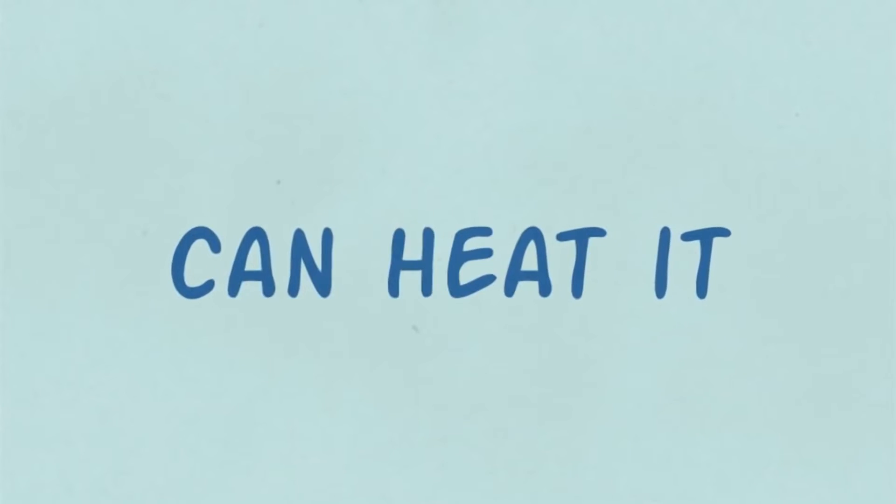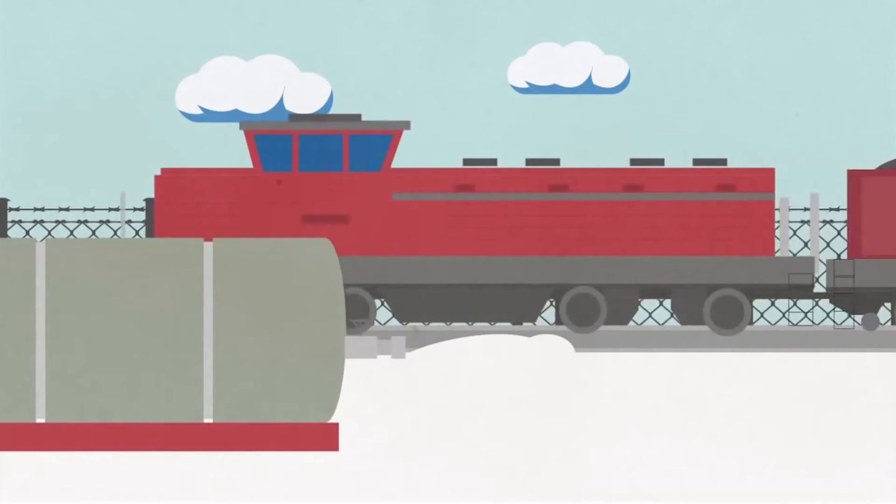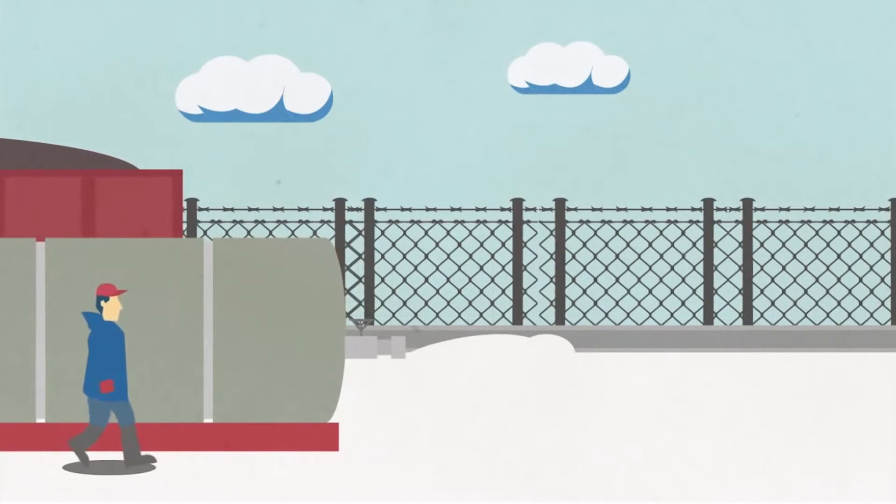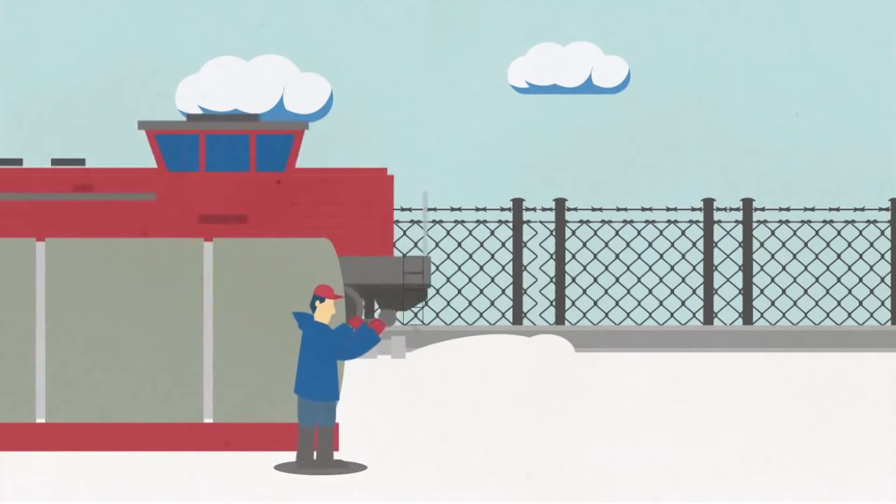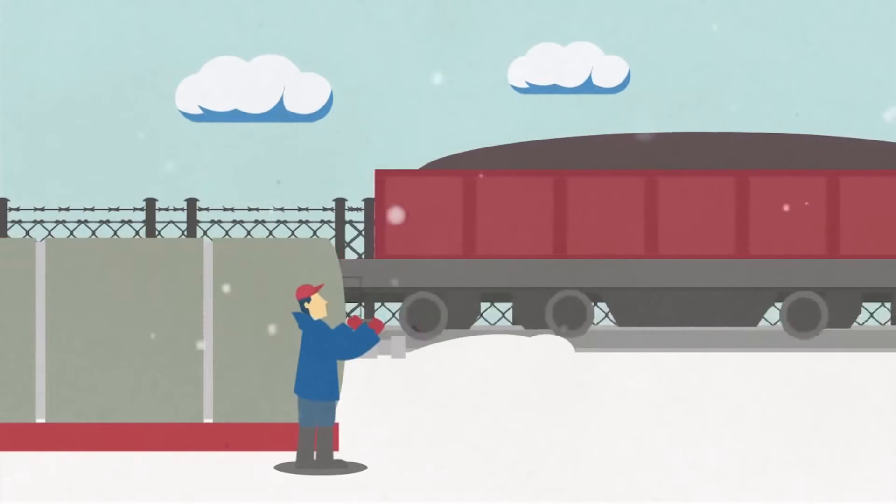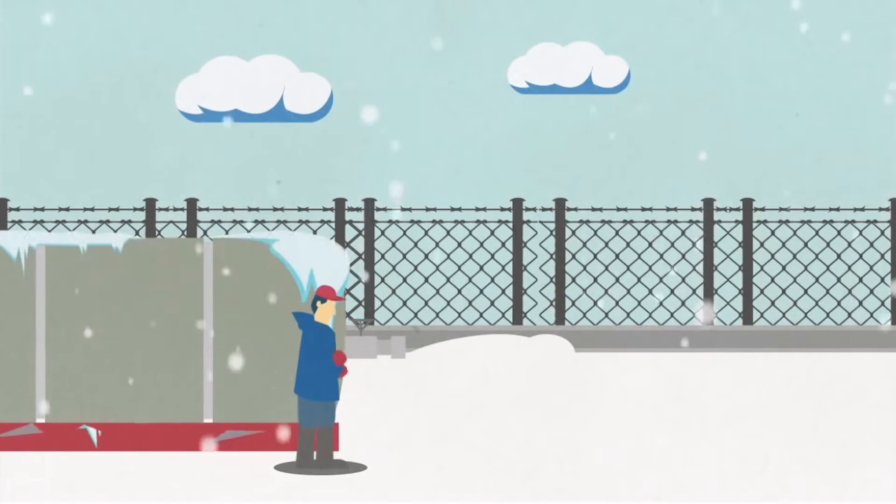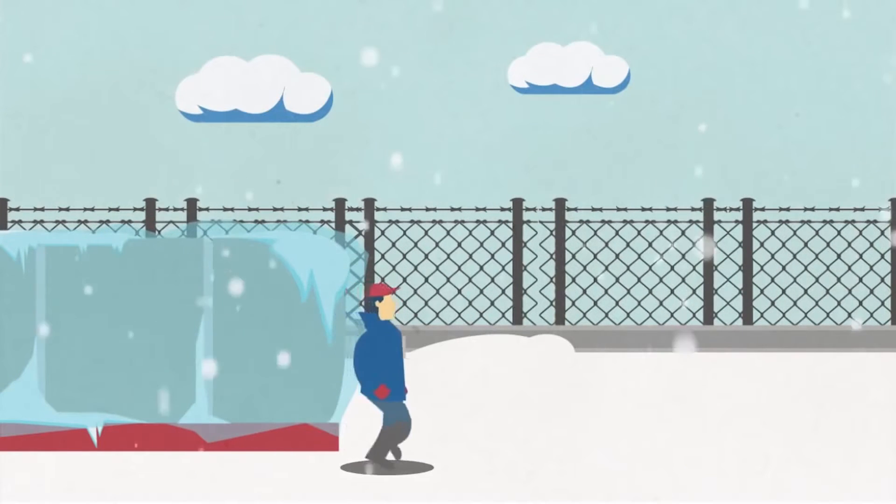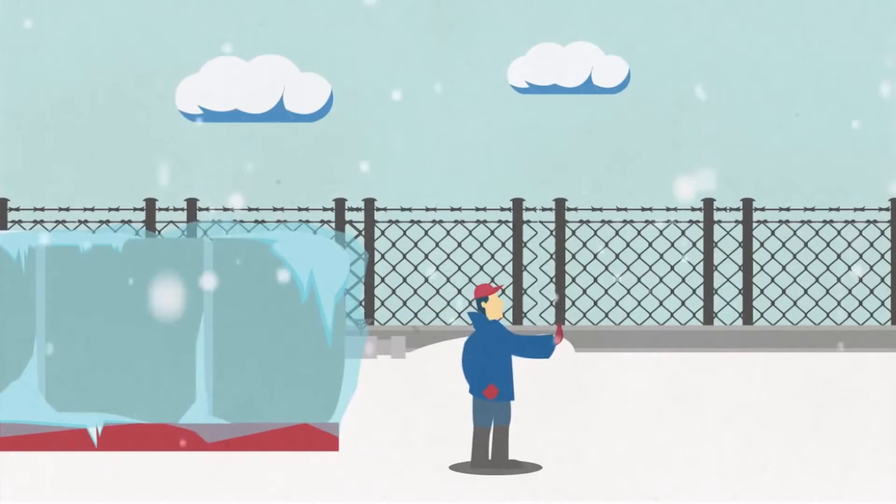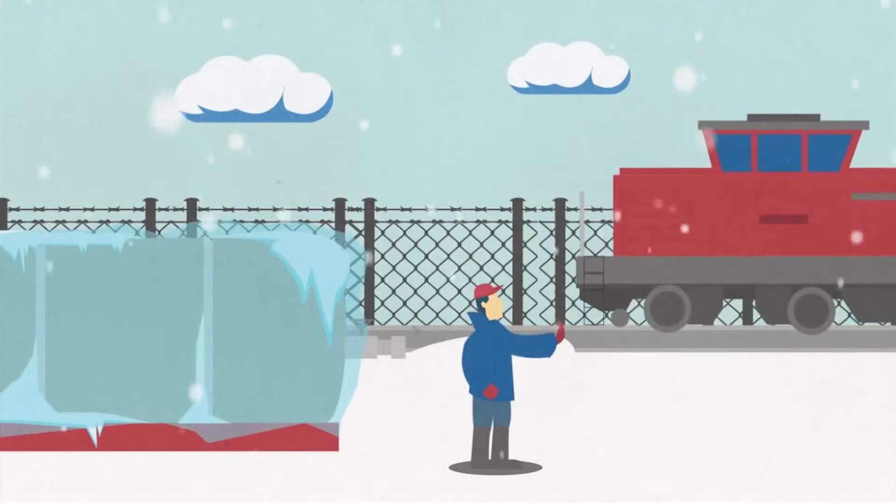In the railroad business, propane tanks play a critical role in powering generators and equipment. When temperatures drop, so does the pressure in the propane tanks. No propane means equipment malfunctions, downtime, and ultimately lost revenue.